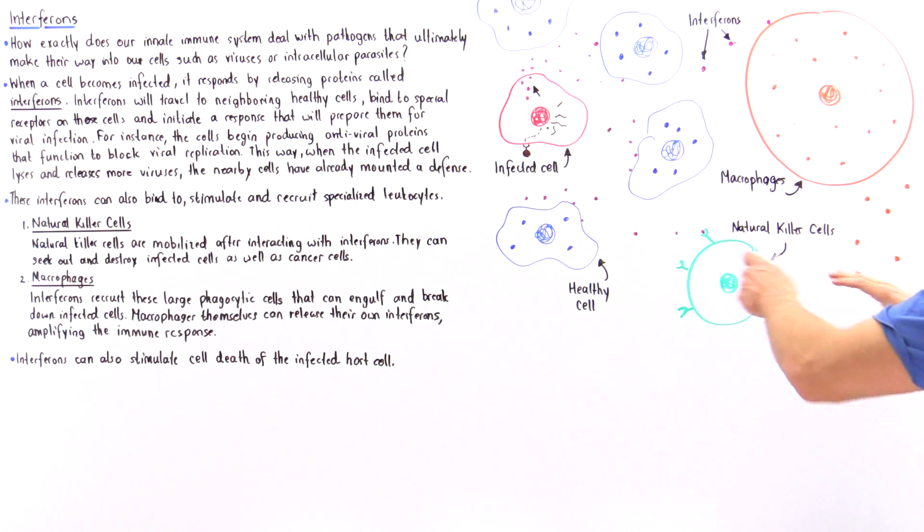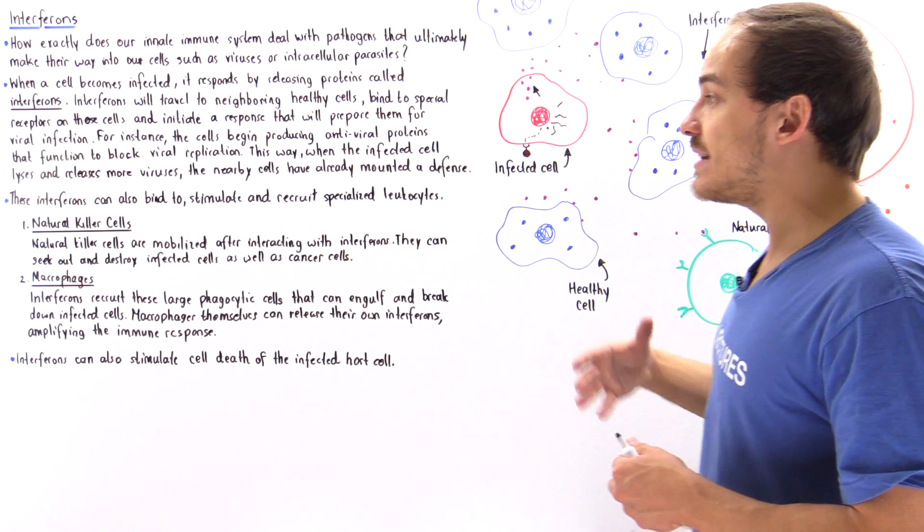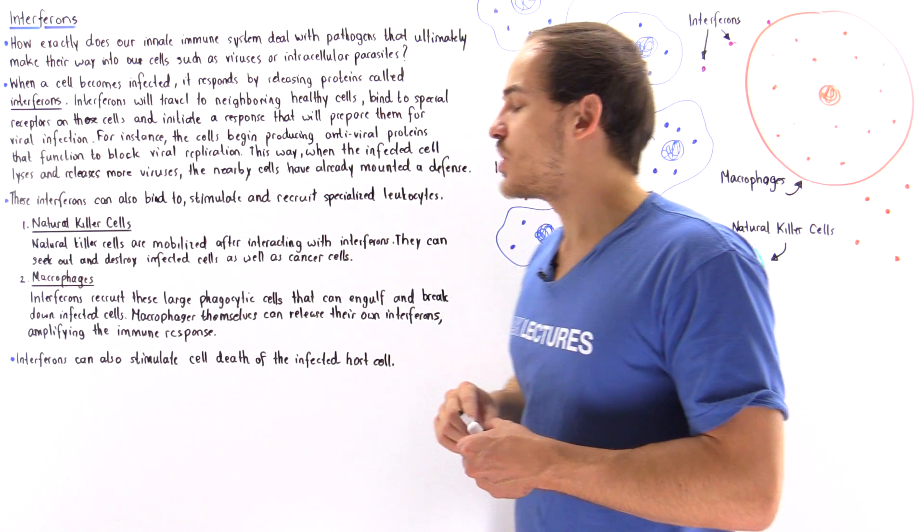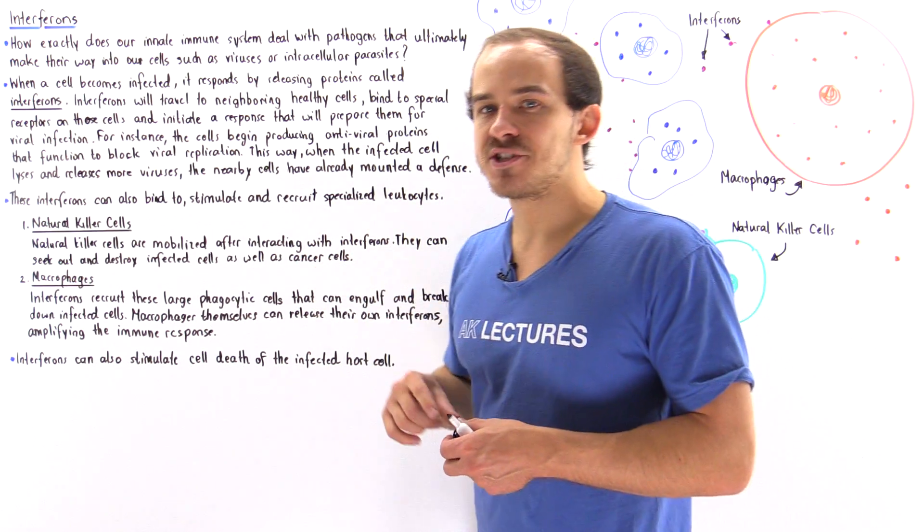And what the natural killer cells ultimately do is they destroy the infected cells and they also destroy cancer cells.